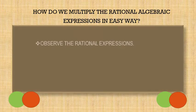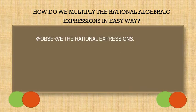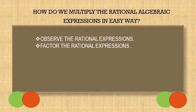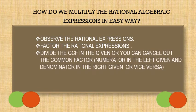First, observe the rational expressions. Second, factor the rational expressions. Next, divide the GCF in the given, or you can cancel out the common factor.